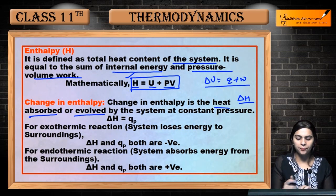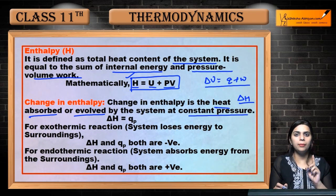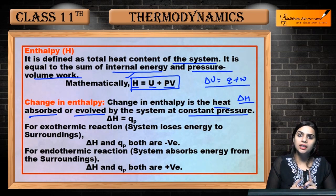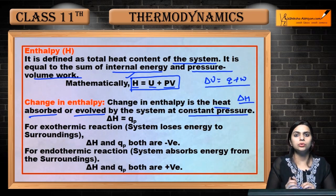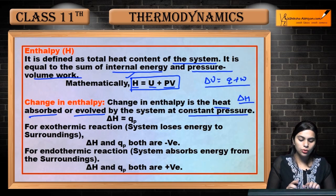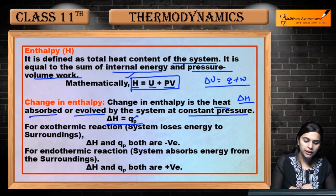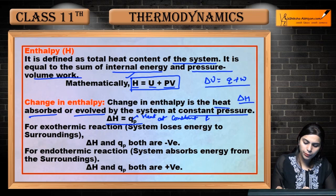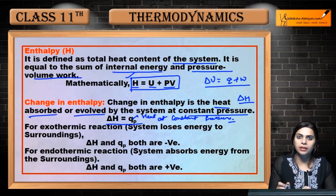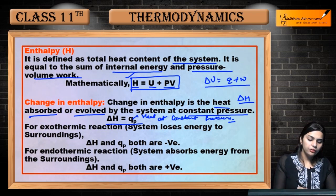Kisi bhi cheez mein change ki baat hai — ya toh aapka system heat ko release kar raha hai ya heat ko gain kar raha hai — yeh sab at constant pressure hota hai. Yahan pe dhyan rakhna hai ki jitna bhi heat ka exchange hoga, whether heat is emitting out or absorbed by the system, yeh sab at constant pressure hota hai. Toh humari ΔH ki value kya hogi? ΔH = qp — heat at constant pressure.